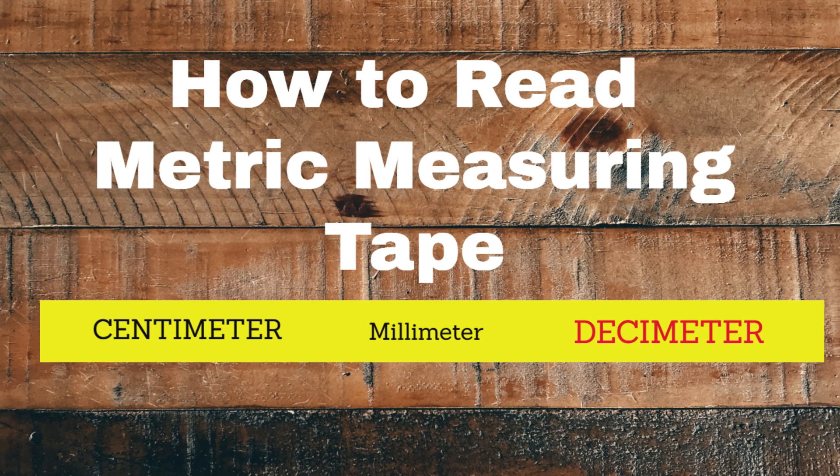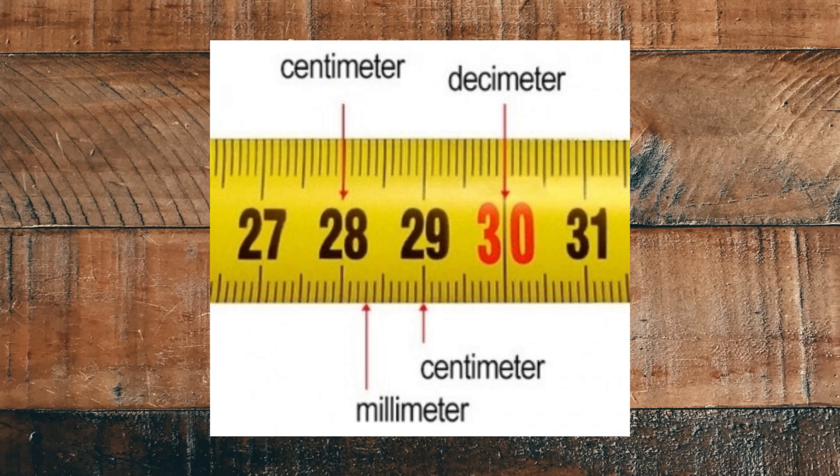On a metric tape measure, you will typically see large red numbers. These are called decimeters, which is one-tenth of a meter. Then you will notice the black numbers, slightly smaller than the red. These are called centimeters.